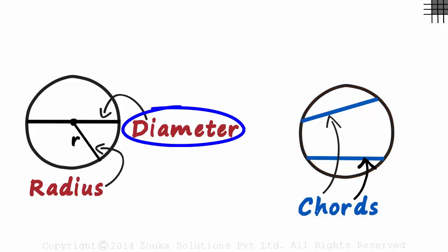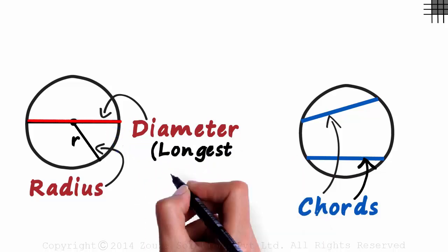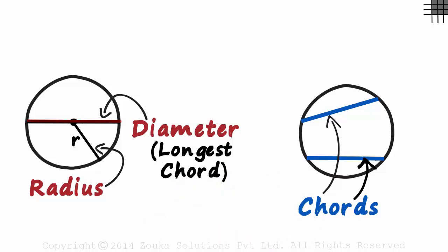Let's go back to the diameter. The end points of the diameter also lie on the boundary of the circle. So is it a chord too? Yes it is, but a special one. It's the longest chord of the circle. The length of the chord as it keeps coming towards the center increases and is maximum when it passes through the center.